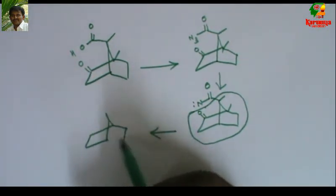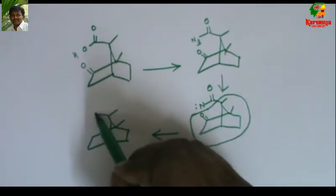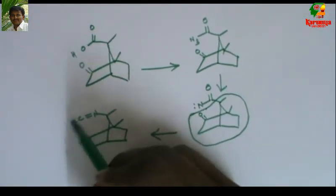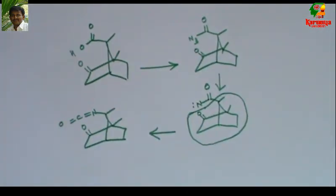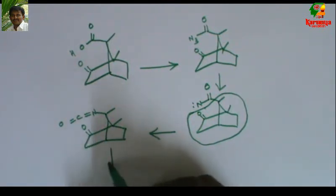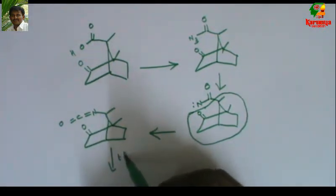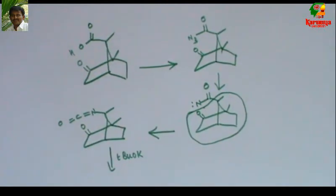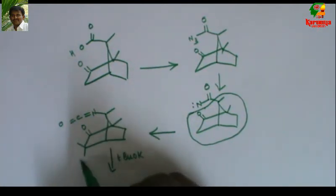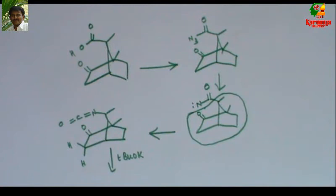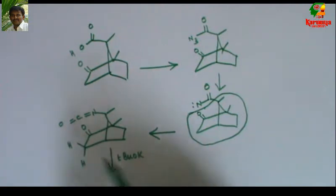Like this. Afterwards, they add potassium tertiary butoxide. It is a hindered base. And there is only one acidic proton - that is nothing but this one.